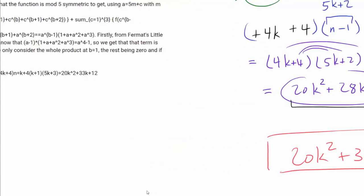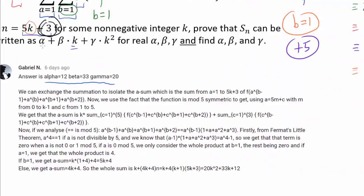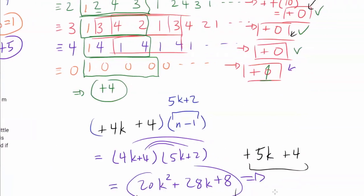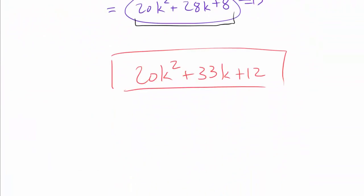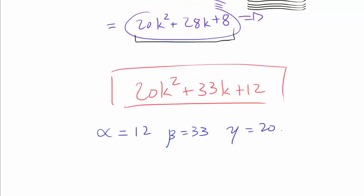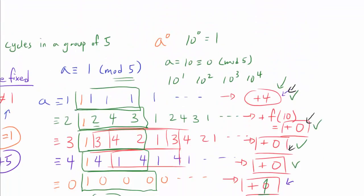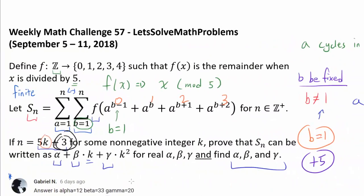So looking at the question again, we want to find α, β, and γ such that S_n = α + βk + γk². From our polynomial 20k² + 33k + 12, we get α = 12, β = 33, and γ = 20.